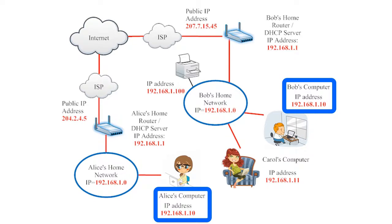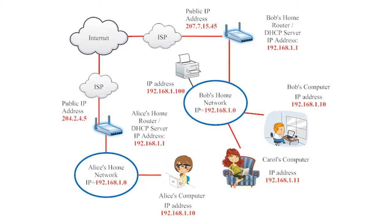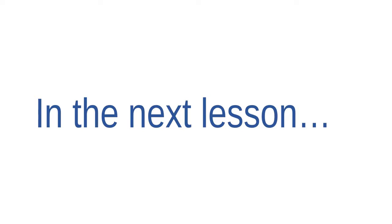It's kind of like how every apartment building in a city must have a unique street address for the post office to deliver mail, but at each unique street address the apartment buildings can reuse the same apartment numbers. In the next video, we'll examine a few more illustrations that will help us see how information is routed through the internet.